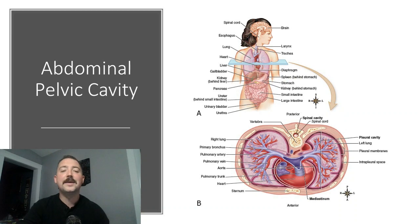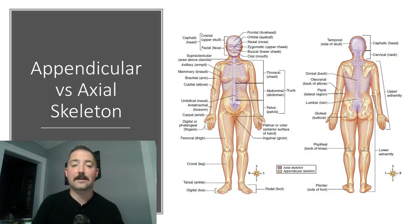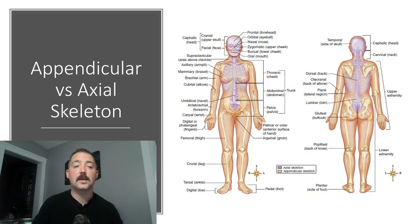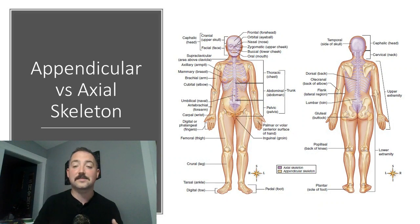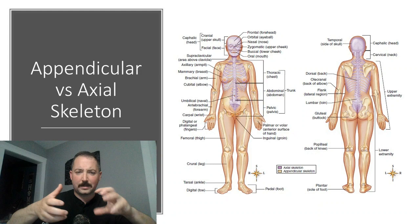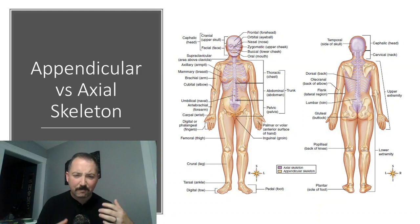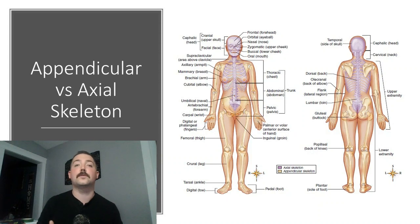We've talked about squishy bits, let's talk about bones for a second. We have two types of skeleton in our body, or more correctly, our skeleton can be divided in two ways. Our skull, spine, and tailbone are all part of the axial skeleton — think axis like the axle of a car, that rod with the wheels attached that everything pivots around. Our arms, legs, and pelvis would then be part of the appendicular skeleton.